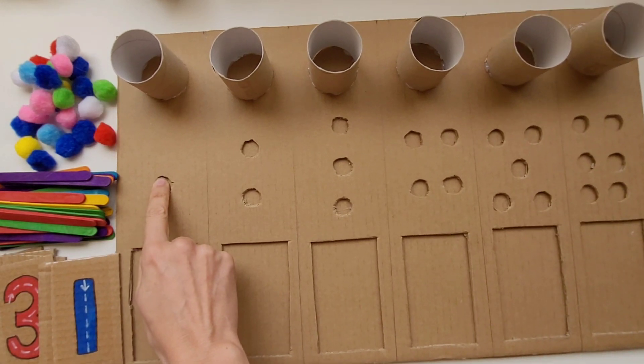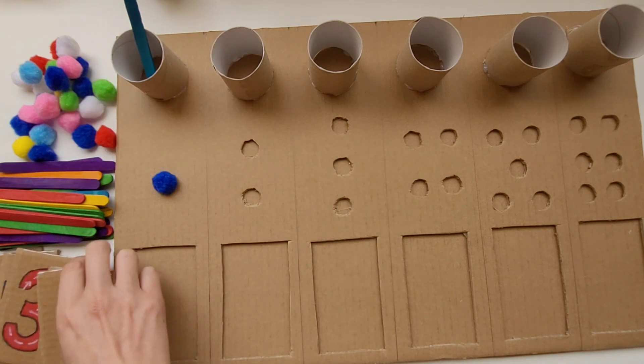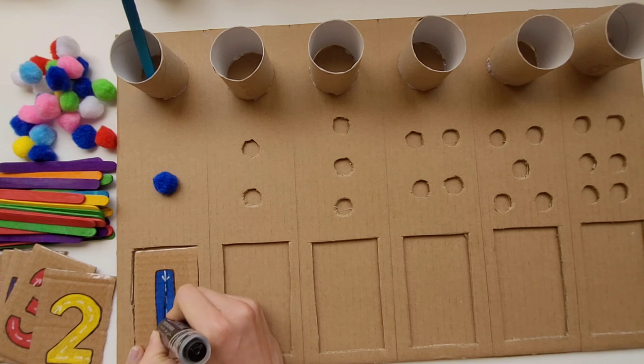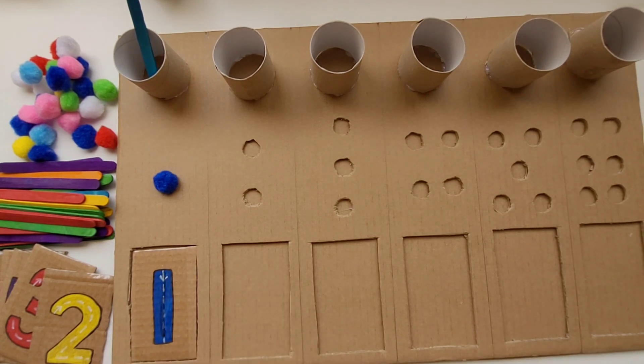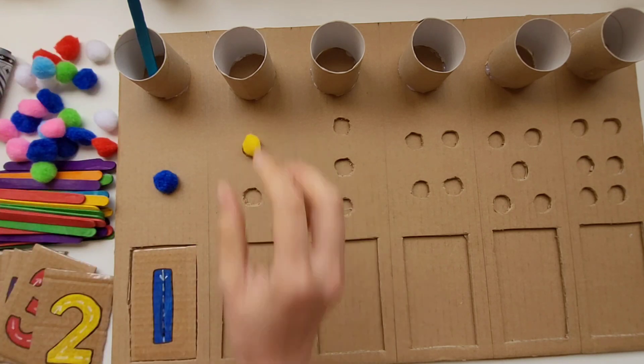They're going to start out by counting the little circles, filling them in with a pom-pom. Then we're going to work on number correlation by putting one stick into the toilet paper roll, finding the card with the number one on it, and putting it in the rectangle, and then tracing it.